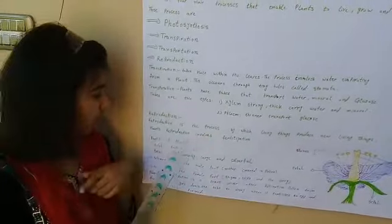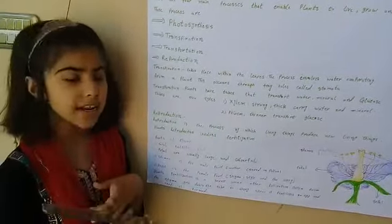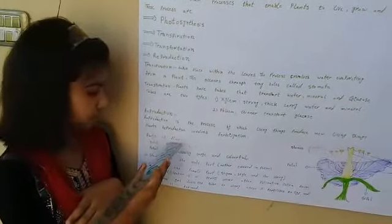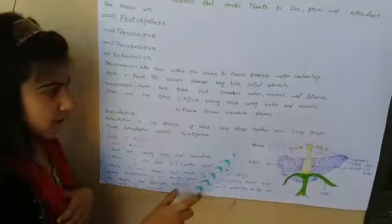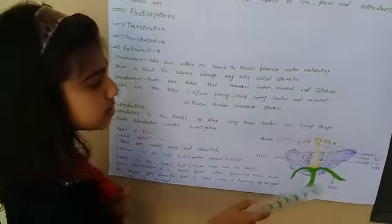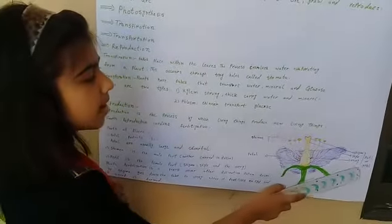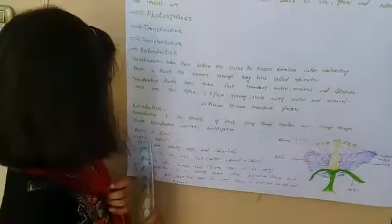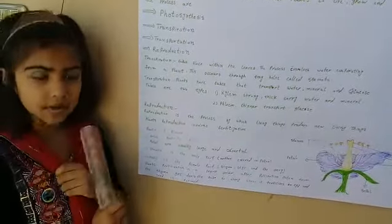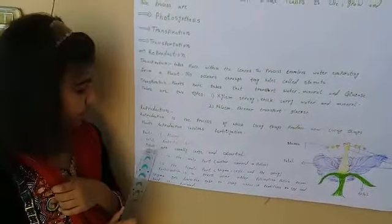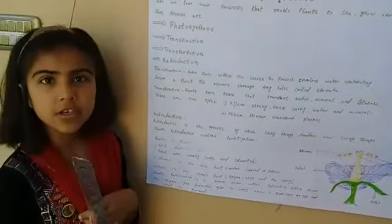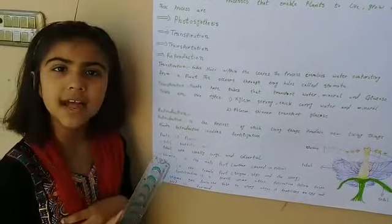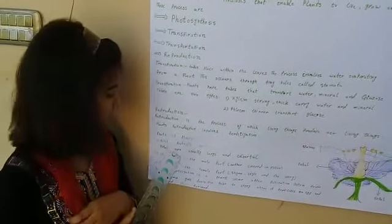Plant reproduction involves fertilization. Parts of a flower: stamen, petal, sepal, and pistil or carpel. Sepal protects the bud. Petals are usually large and colorful. They attract birds and insects.